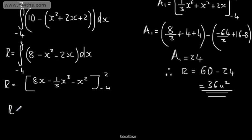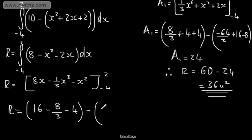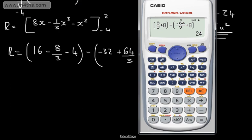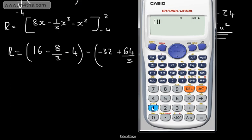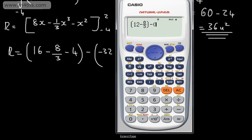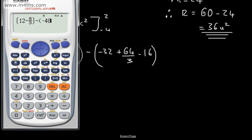Substituting x equals 2: 16 minus (8/3) minus 4, giving 12 minus (8/3). Substituting x equals negative 4: negative 32 plus (64/3) minus 16, giving negative 48 plus (64/3). Subtracting the lower from the upper confirms that R equals 36, exactly the same result as before.